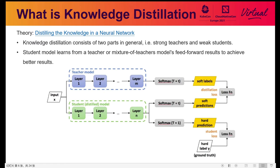What is knowledge distillation and what are its benefits? Nowadays deep learning models are getting bigger and deeper. In many scenarios, larger models with more layers yield better results, but limited by reasoning speed and video memory constraints, large models usually cannot be deployed directly and need to be compressed. Current mainstream compression methods include tailoring, quantification, and knowledge distillation. Knowledge distillation is a state-of-the-art technology proposed in the 'Distilling Knowledge in a Neural Network' paper published by Hinton in 2015.